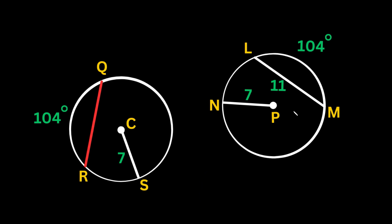Now we have two different circles and we're solving for the length of a red chord. Both circles have a radius of 7 and an arc measure of 104 degrees. One chord is given as length 11. Because both circles have the same radius and the same arc measure, the two chords are congruent, so the red chord is also 11.